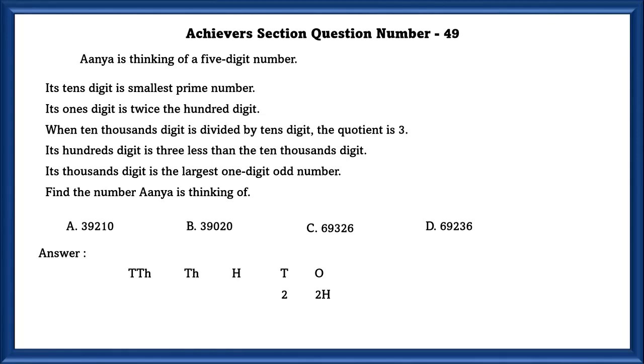When 10,000th digit is divided by its 10s, the quotient is 3. Its 10s is 2. So 6 divided by 2 is equal to 3. Its hundredths digit is 3 less than the 10,000th digit. That is 3.